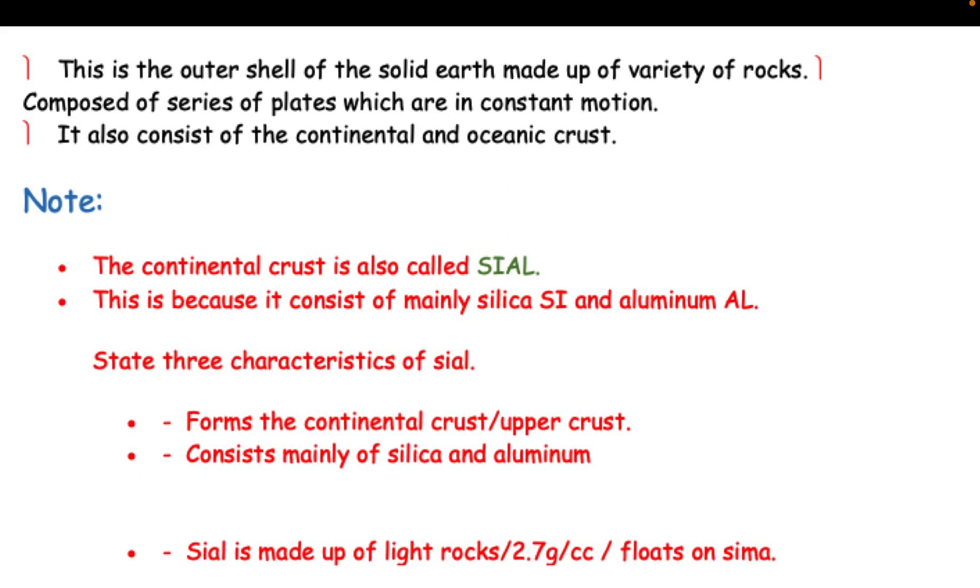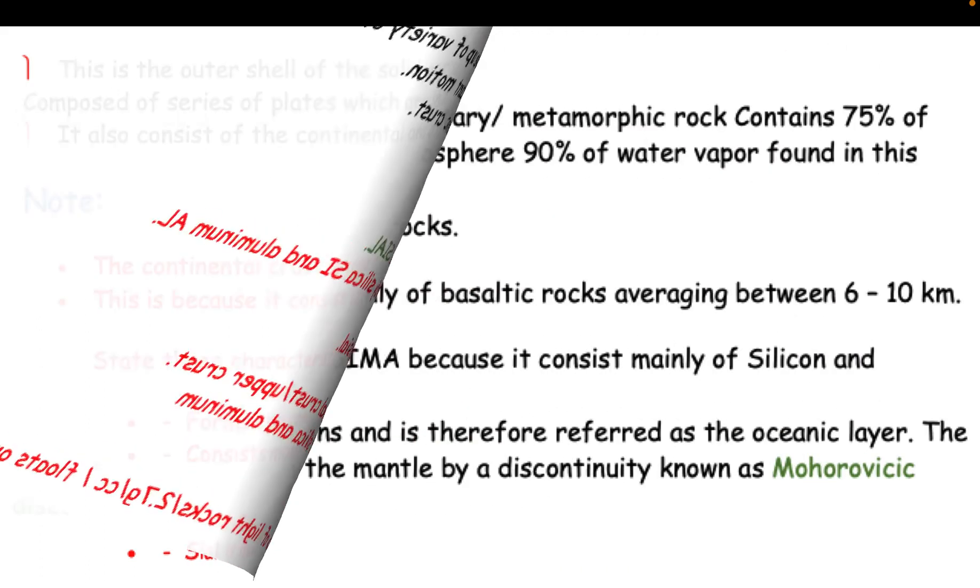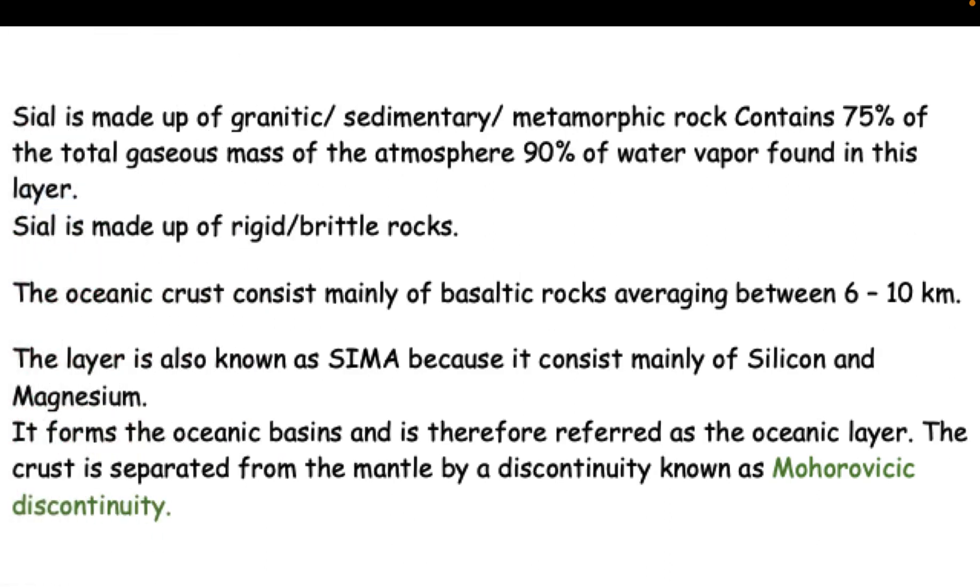Forms the continental crust upper crust, consists mainly of silica and aluminum. SIAL is made up of light rocks 2.7 grams per cc, floats on SIMA. SIAL is made up of granitic, sedimentary, metamorphic rock. Contains 75% of the total gaseous mass of the atmosphere, 90% of water vapor found in this layer.